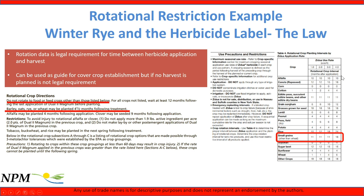Herbicide B has similar language except the rotational restriction is 11 to 18 months depending on the herbicide rate. So this is something we should think about when planning herbicide applications this year: am I going to plant a cover crop in the fall that I then want to graze or harvest for forage value the next spring? If so, I need to examine that rotational restriction to make sure I'm not going to have a problem when I want to harvest it in the spring, and there may still be a herbicide rotational restriction on that field.